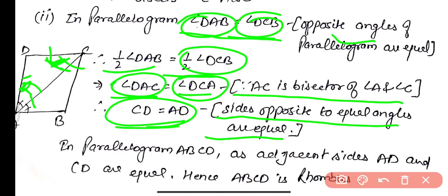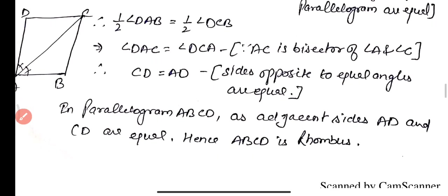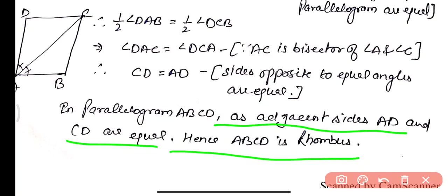Sides opposite to equal angles of a triangle are equal. If in a parallelogram two adjacent sides are equal, then the parallelogram is a rhombus. Here in parallelogram ABCD, adjacent sides AD and CD are equal, hence ABCD is a rhombus.